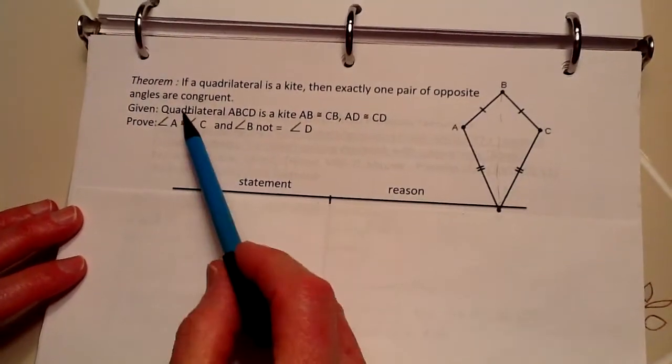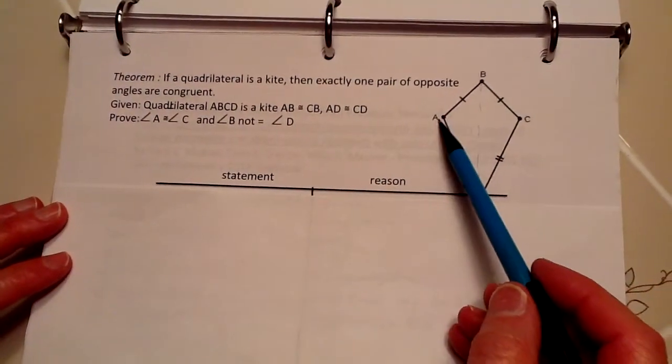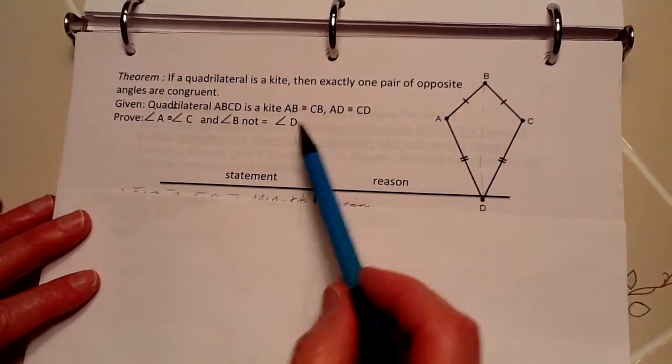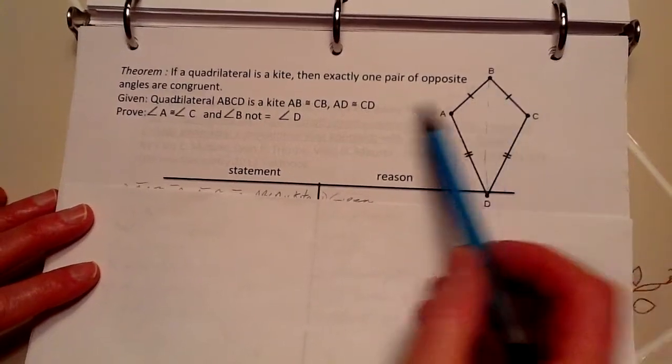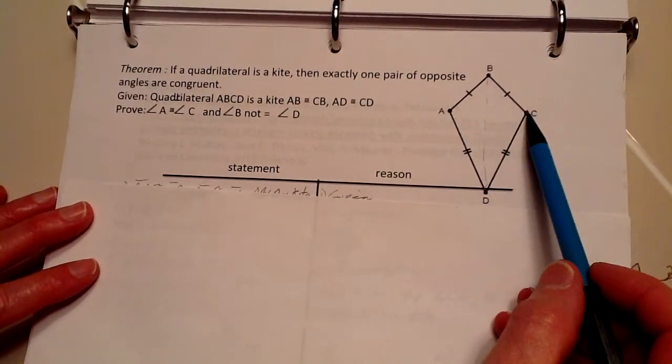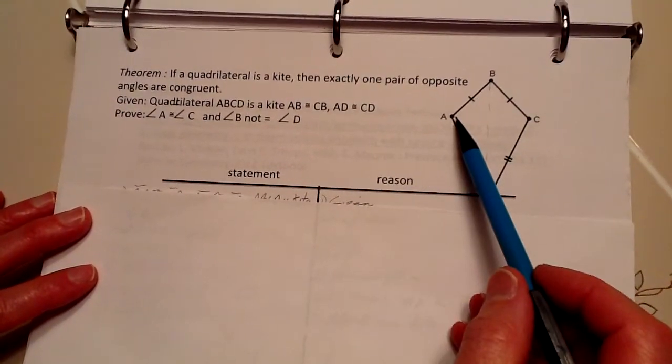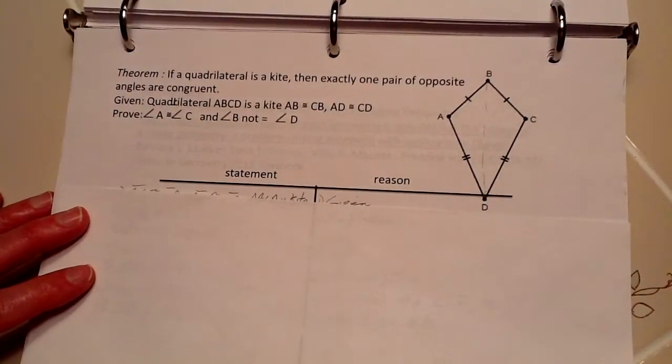We have our quadrilateral, which is a kite, ABCD, and we know, because of the definition of a kite, that AB is going to be congruent to CB, and likewise AD and CD are going to be congruent.